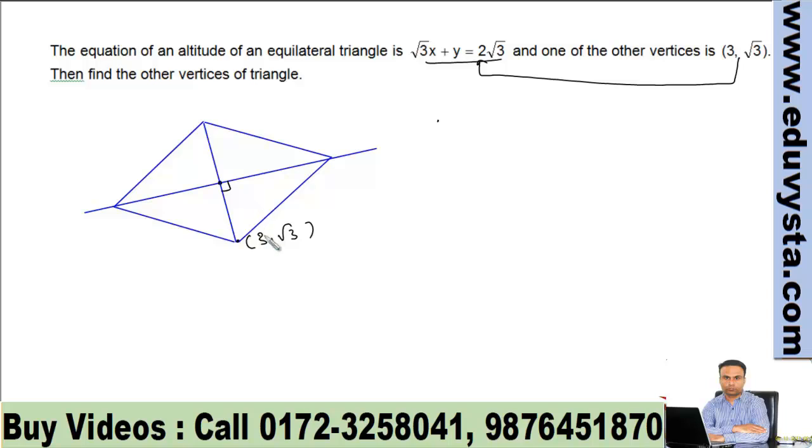This angle is 90 degrees. This line has equation √3x + y = 2√3. Now, how do we get this point? This point is the image of this point in this line. We have D is the image of point C in the line.